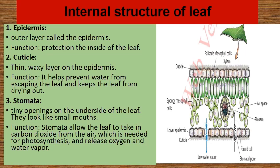1. Epidermis — the outer layer of the leaf, called the epidermis. Its function is protection of the inside of the leaf. 2. Cuticle — a thin, waxy layer on the epidermis. Its function is to help prevent water from escaping the leaf and to keep the leaf from drying out.